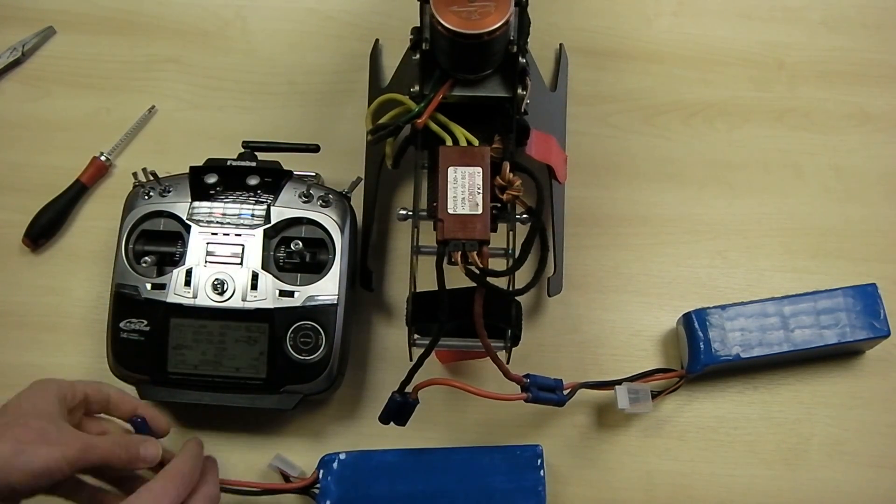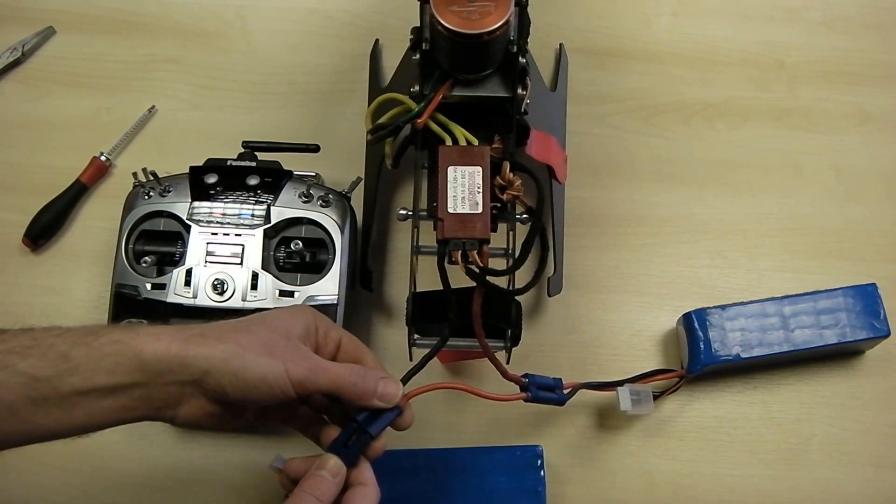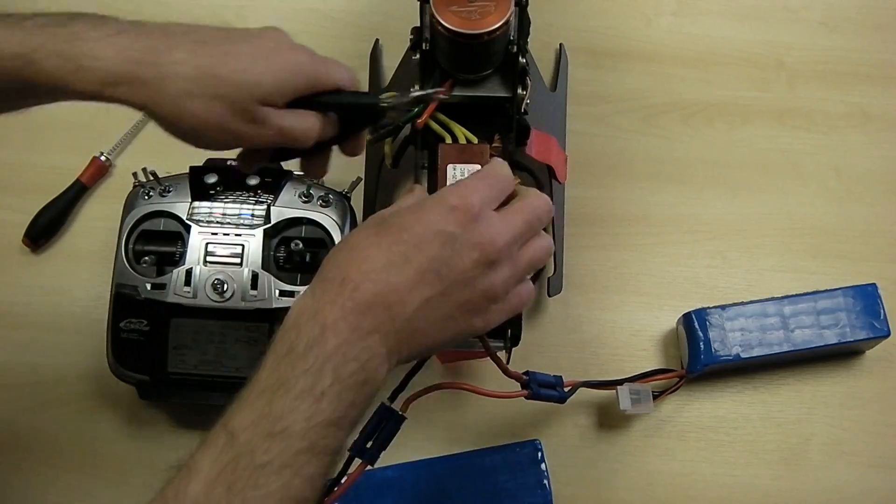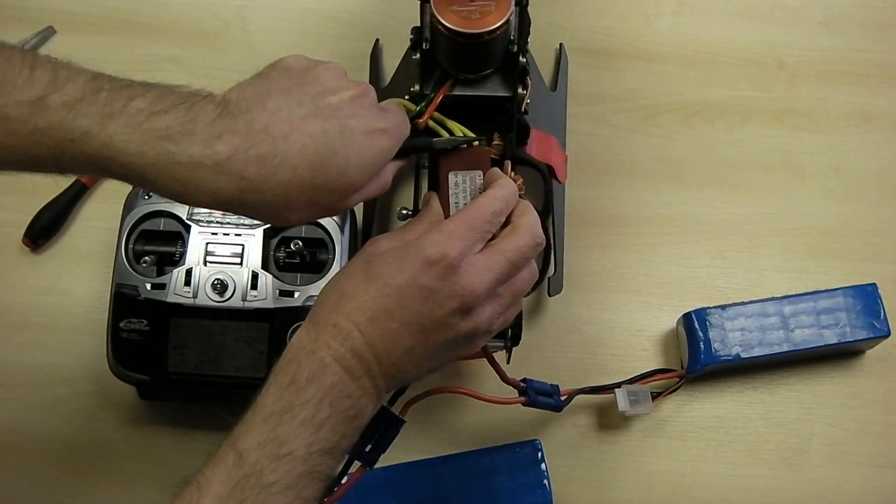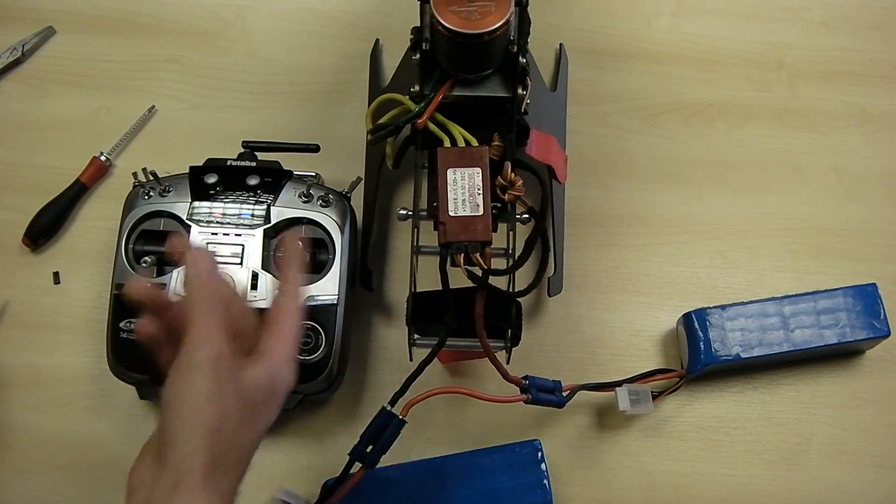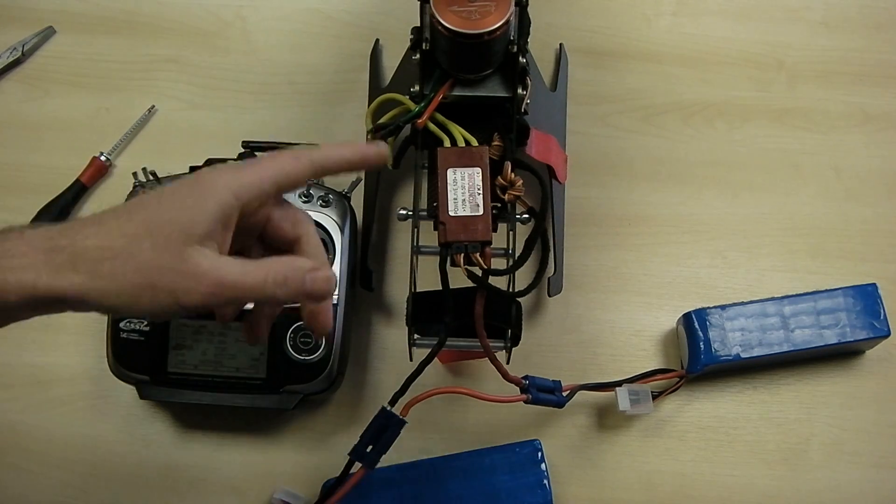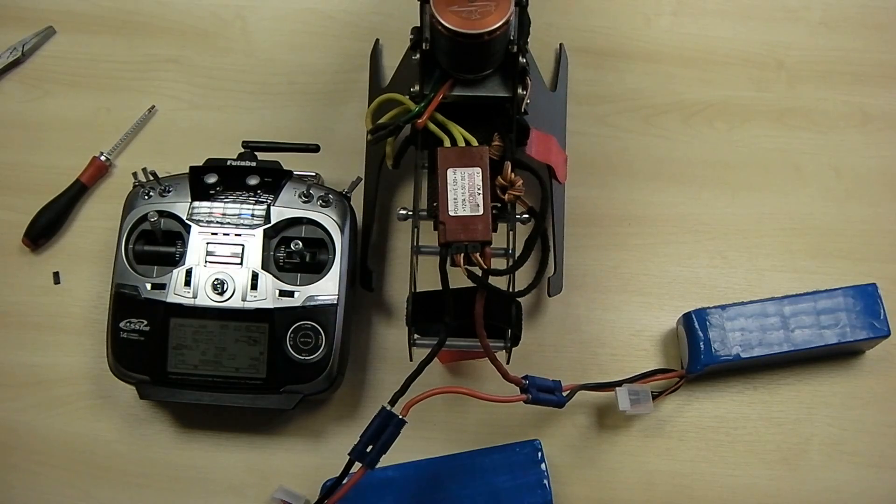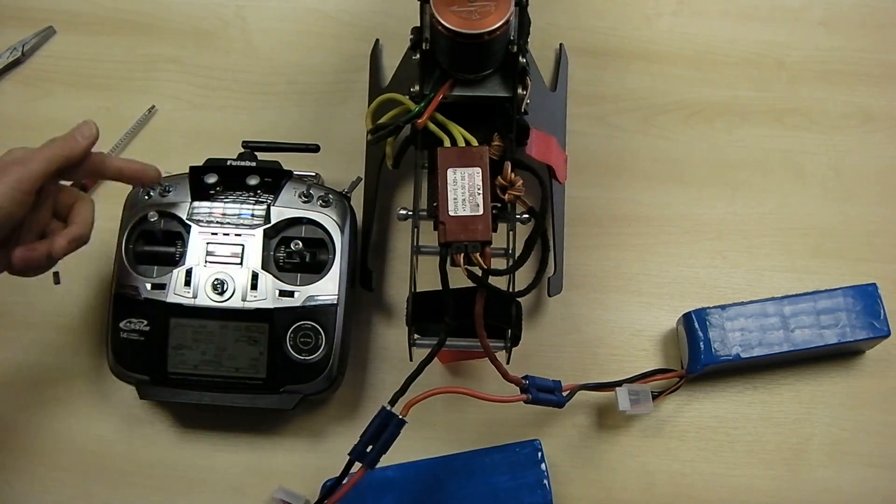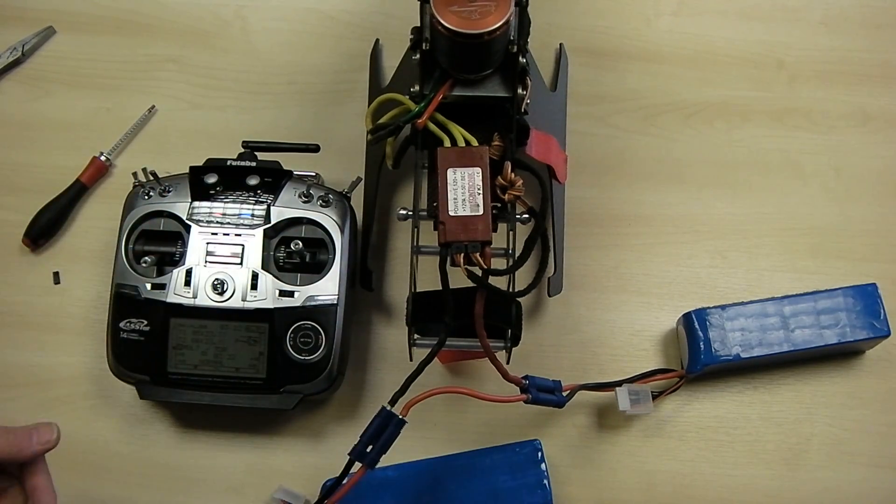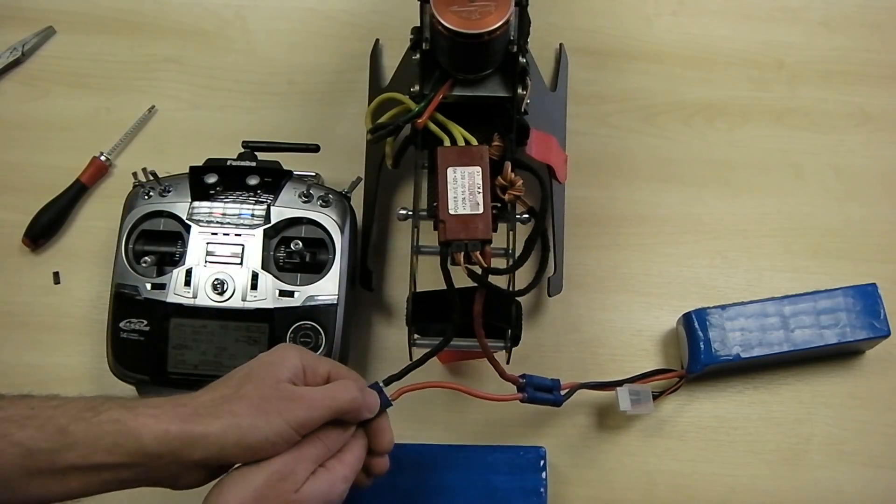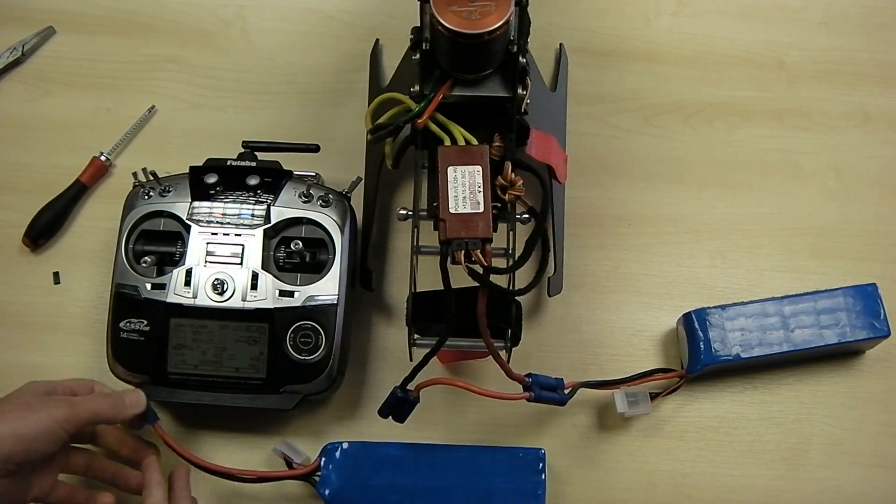So let's plug in. There's the initialization tones. Pull the jumper, goes into programming. First one, mode one, full throttle, wait for confirmation. Reduce it, repeats the tone. That's just to confirm what mode you've just set. Disconnect the power.